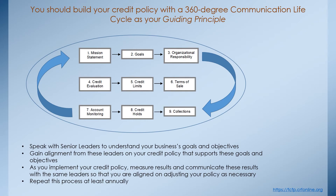You should build your credit policy with a 360 degree communication life cycle as your guiding principle. It's important as you build your credit policy that you speak with senior leaders to understand your business's goals and objectives, then gain alignment from these leaders on your credit policy so that it supports their goals and objectives. Implement your credit policy in such a way that you can measure results, communicate these results back, adjust your policy as necessary, and review your credit policy on at least an annual basis.